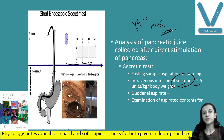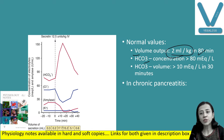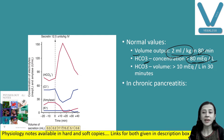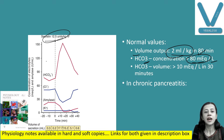To stimulate enzyme secretion, cholecystokinin (CCK) is also injected. Normal volume of pancreatic juice is 2 ml per kilogram in 80 minutes. Normal bicarbonate concentration is more than 80 mEq per liter, and bicarbonate volume is more than 10 mEq per liter in 30 minutes. In cases of chronic pancreatitis, this secretory activity is reduced, as shown in the graph with samples taken at different time intervals after 12.5 units per kilogram IV secretin.